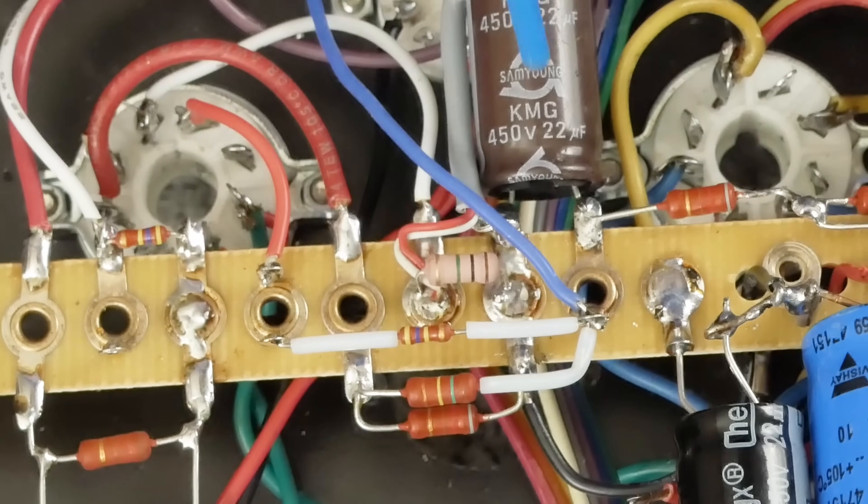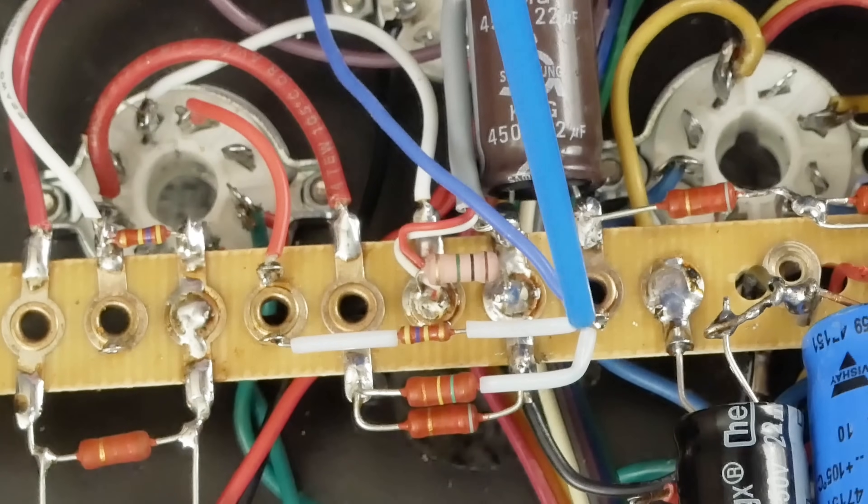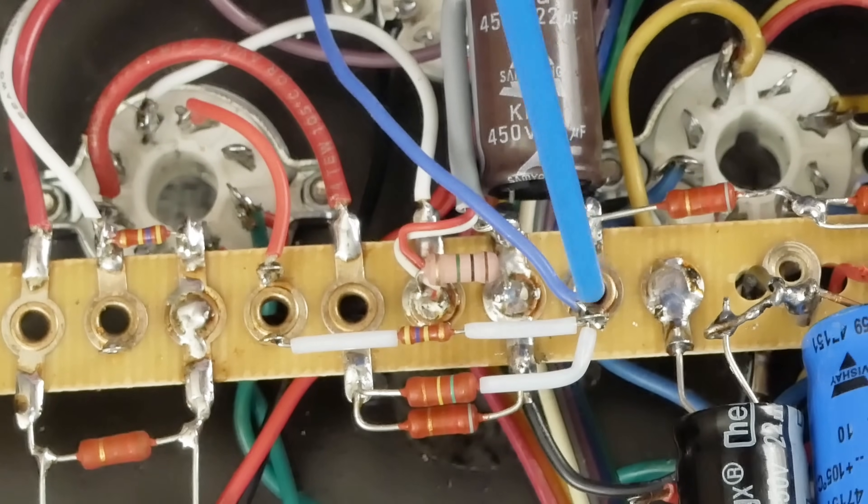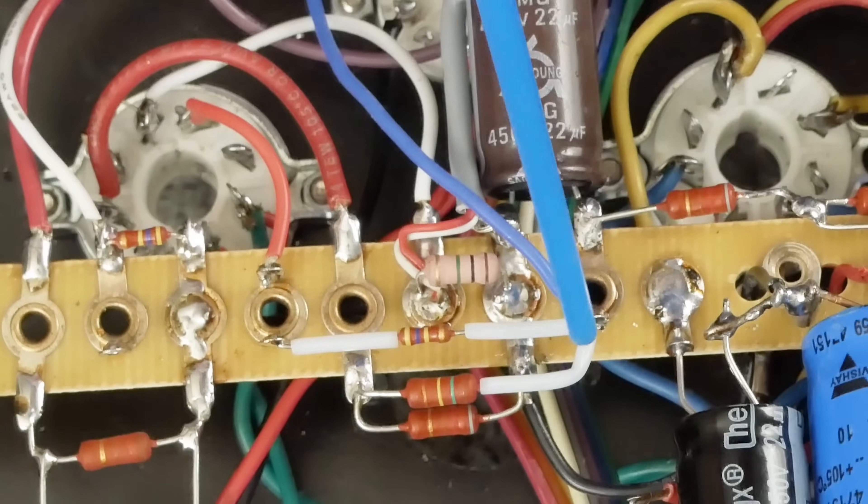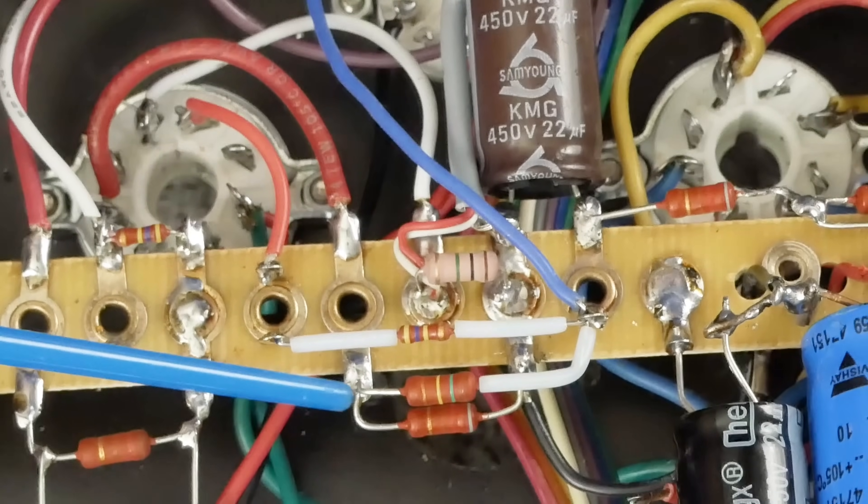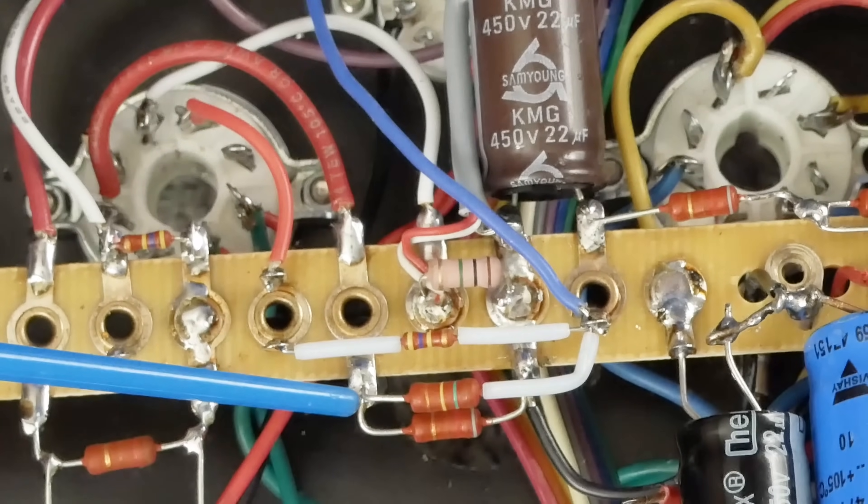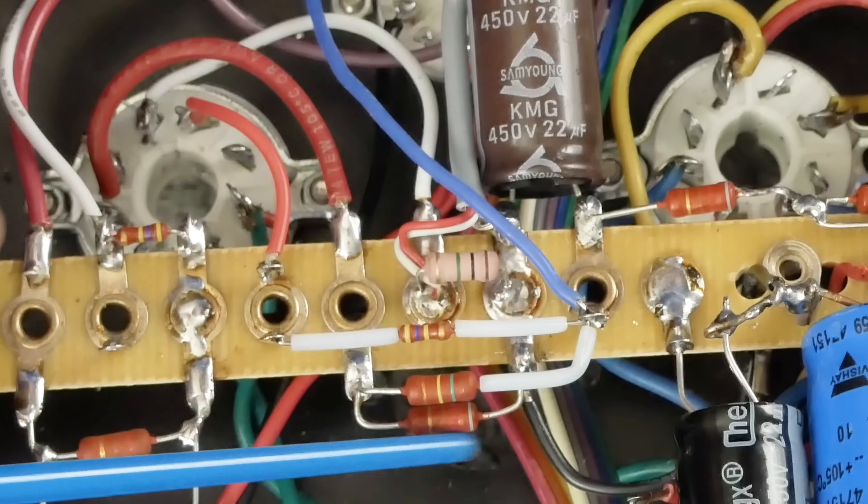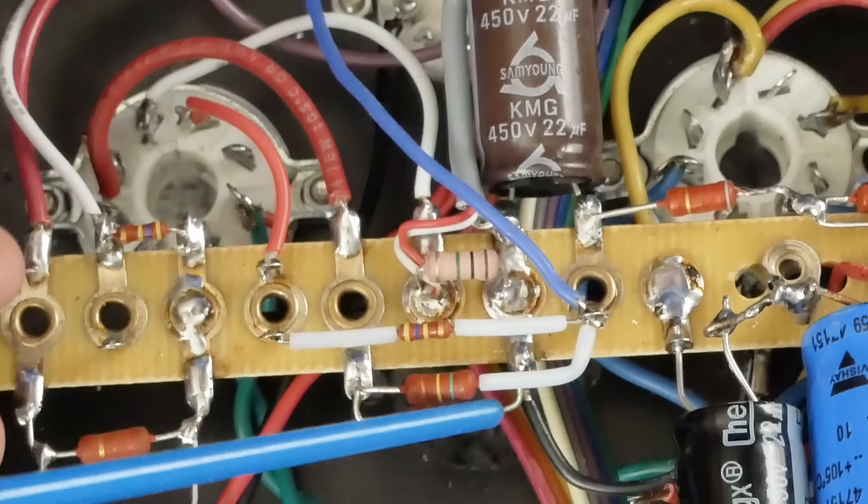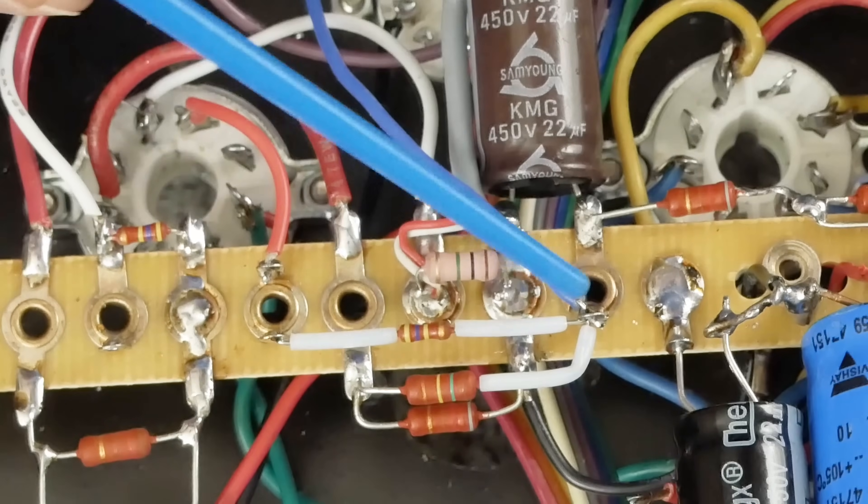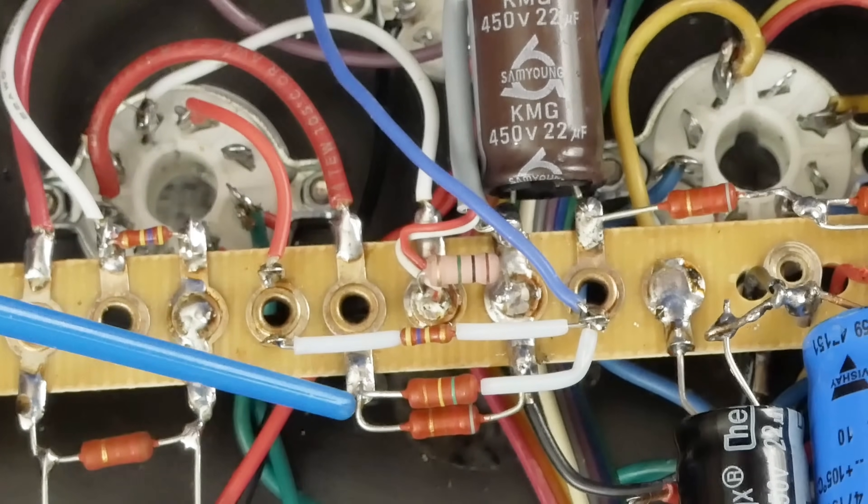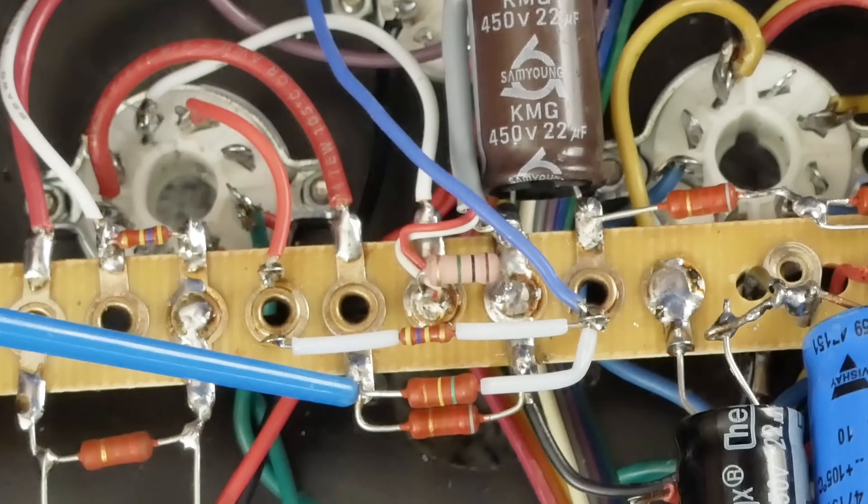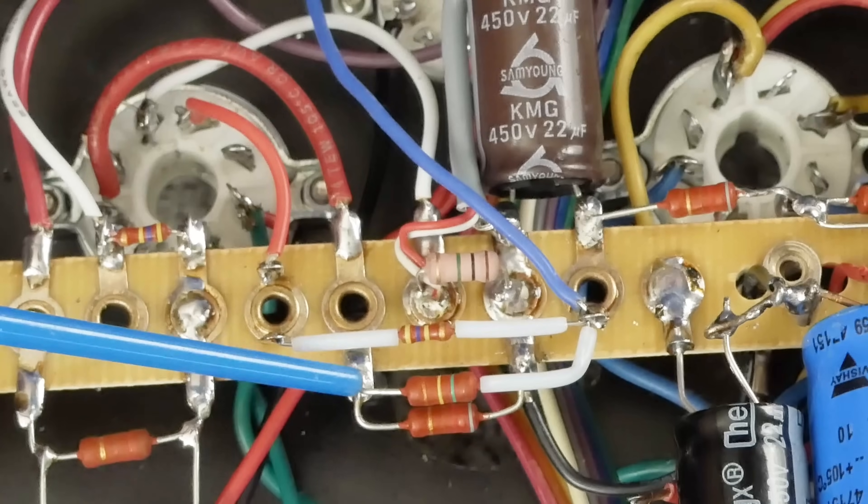So then the final stuff we have is we need to put this 150K resistor from the same 255 volt point over here to the cathode of the driver tube. We've already put in the 820 ohm cathode resistor from ground to here. So then we can just connect from here with this 150K to the cathode to have the voltage divider to set the bias voltage for the driver tube.